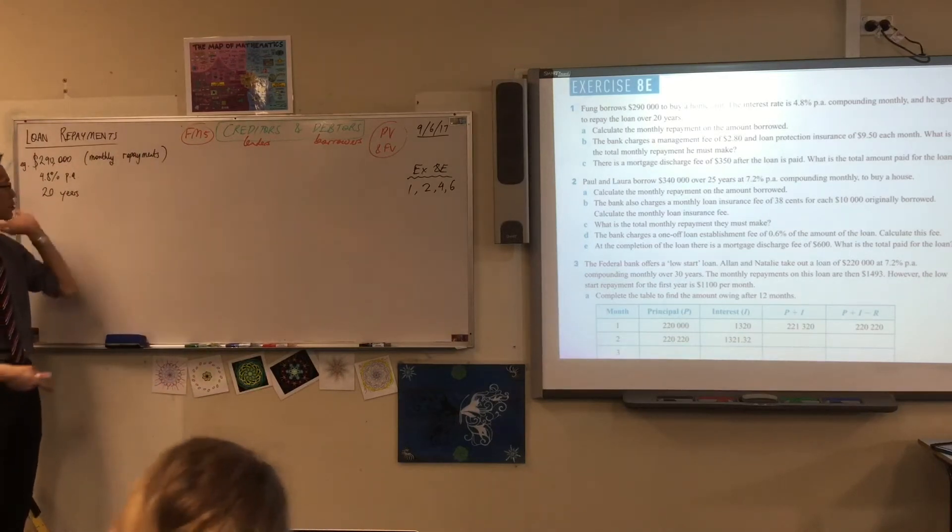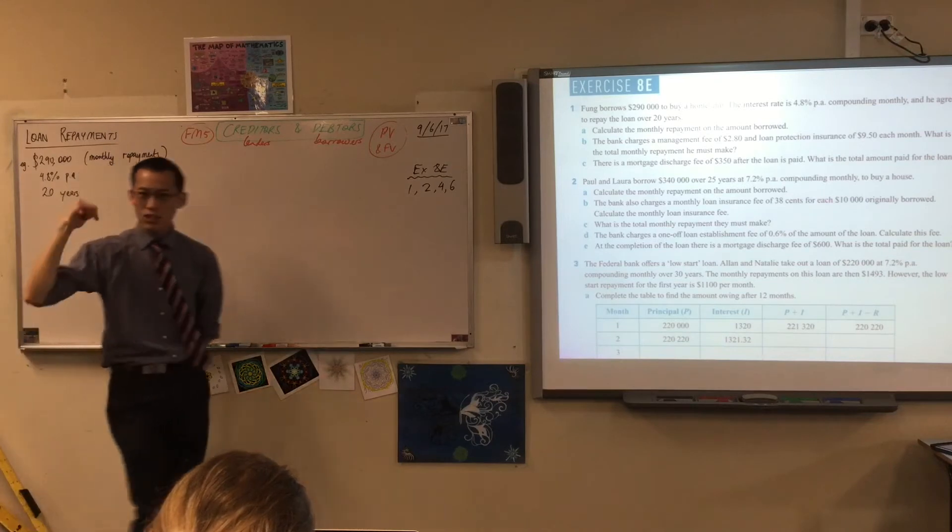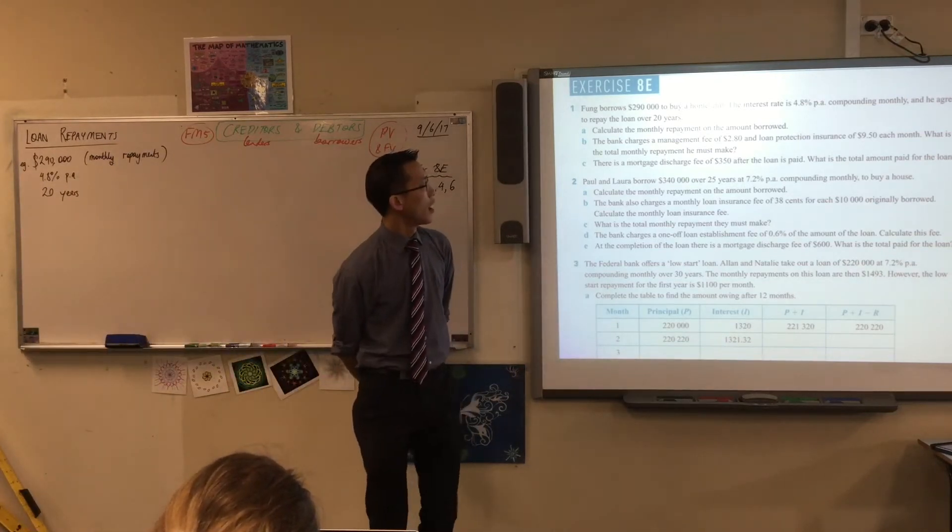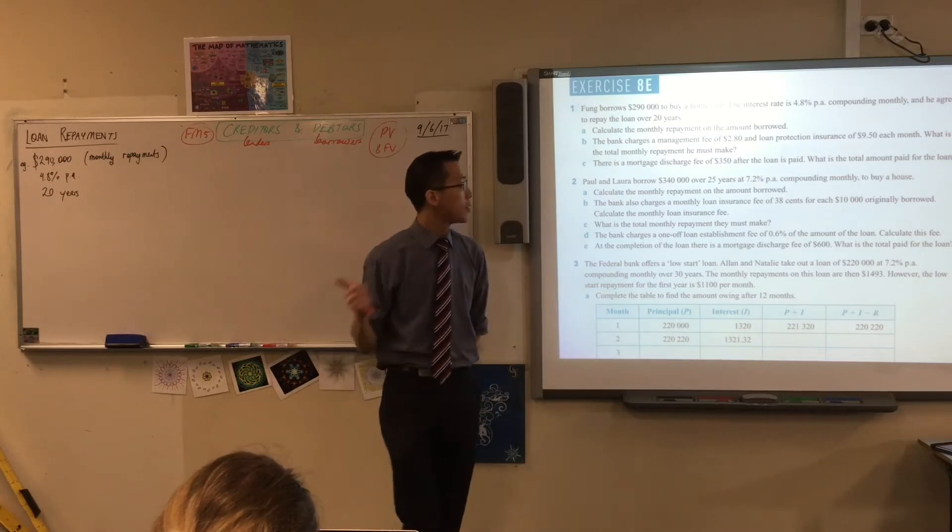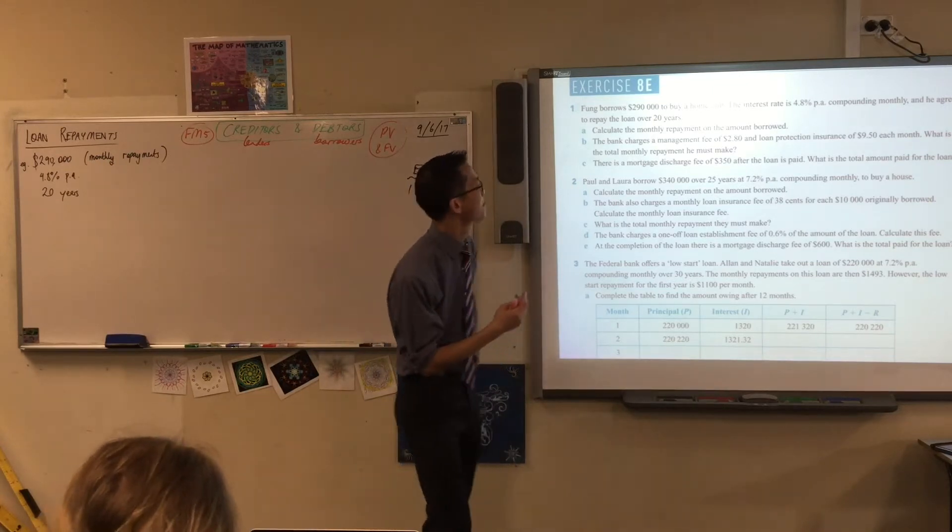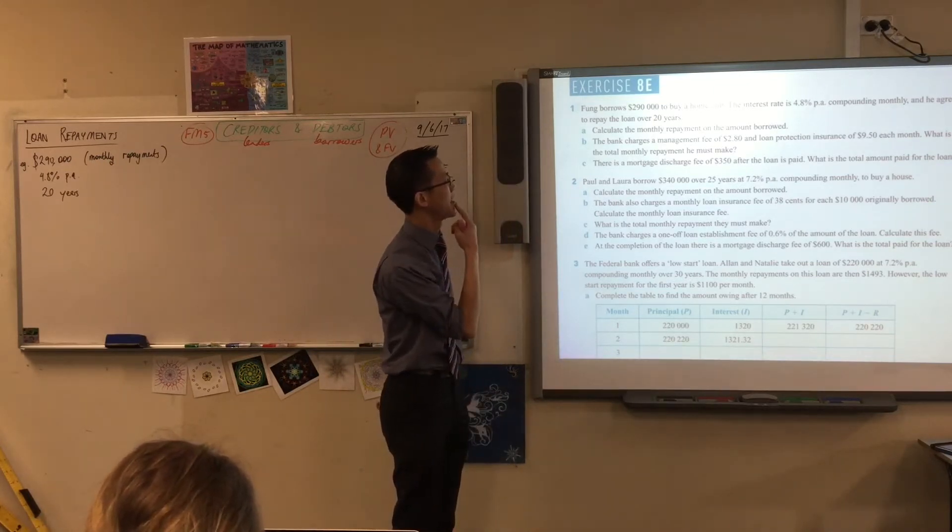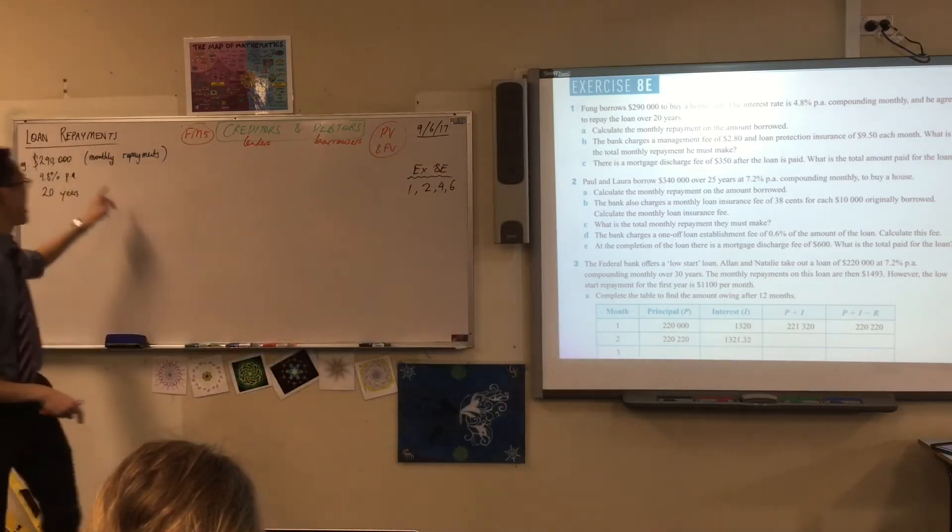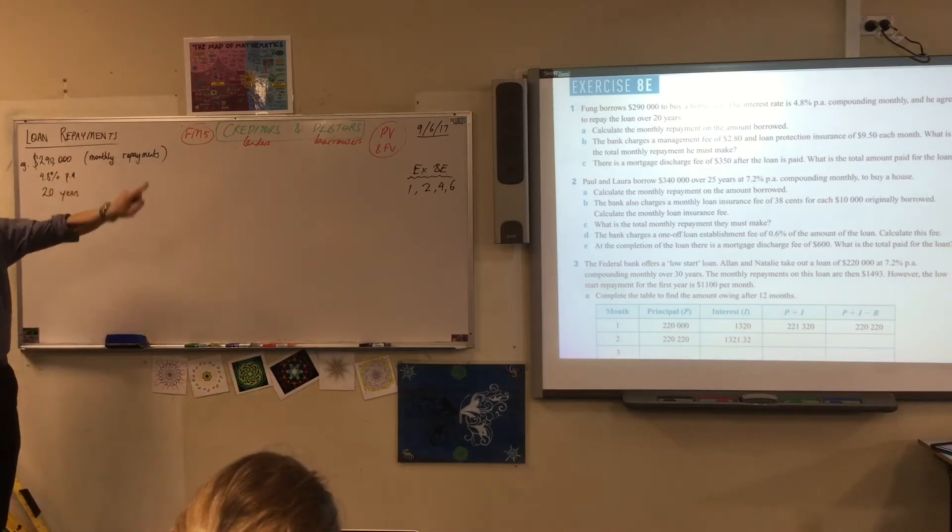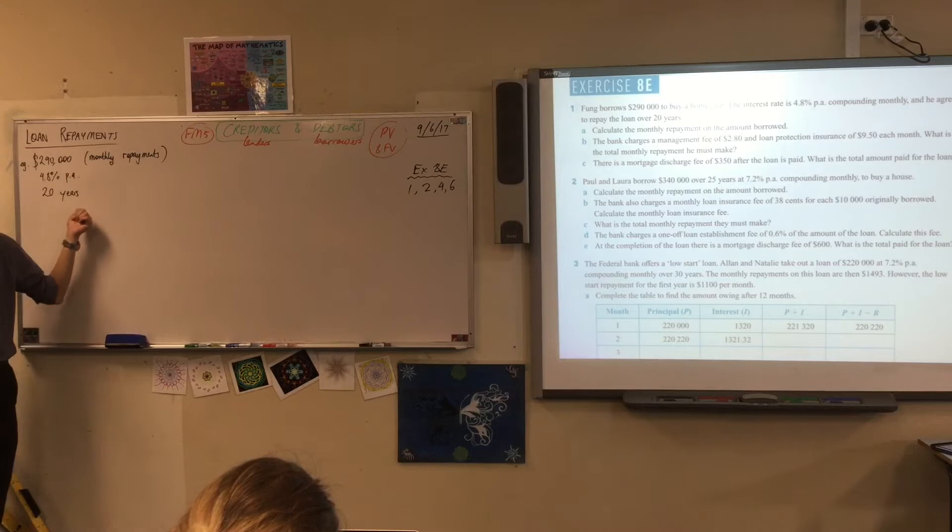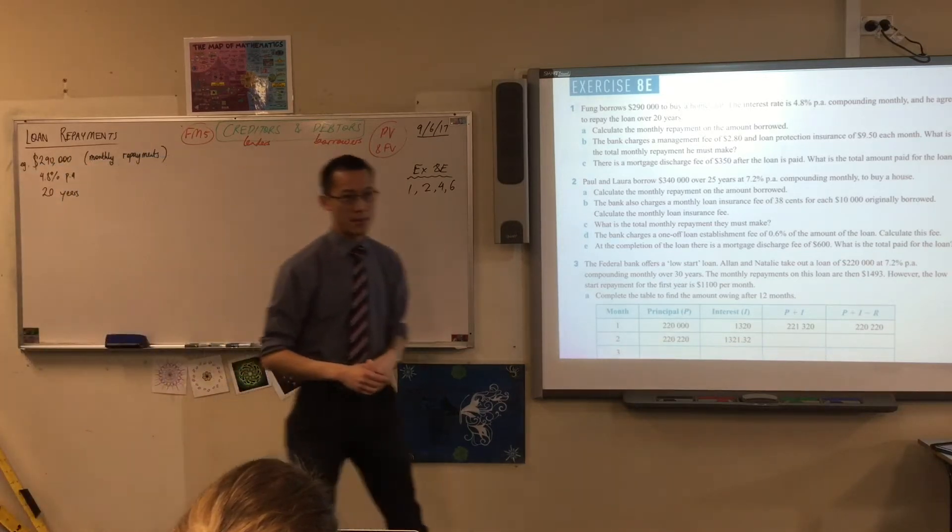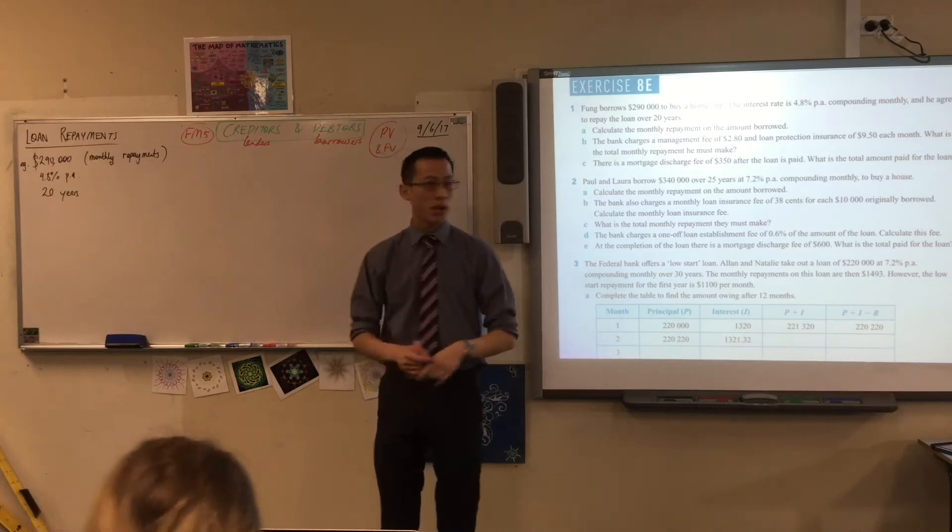So we're switching gears but we're looking at the same concepts. It just takes a little extra thought which I'm going to guide you through. So I've just jotted down the essential details from question one and we'll talk through it. Fung borrows this amount of money to buy a home unit - it's pretty funny how quickly that number gets out of date but anyway, you can't buy something in Sydney for that amount anymore. The interest rate is 4.8% per annum, they say it compounds monthly, and he agrees to repay the loan over this amount of time. Calculate the monthly repayment.